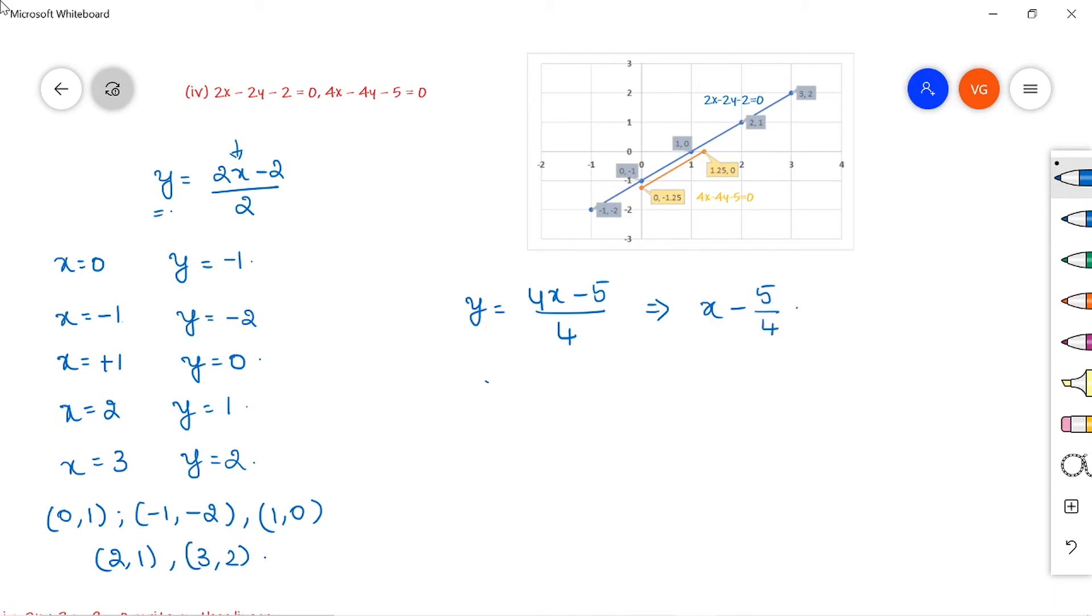Take different values of x. Suppose x equals 0, then y value will be minus 5 by 4. Take x equals 5 by 4, then y value will be 0. I am taking only two values, that is enough to plot the graph.